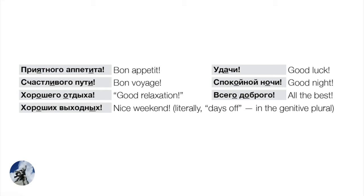Another polite phrase: Хорошего отдыха — literally 'good relaxation,' meaning have a nice vacation or happy time off. Have a good weekend is Хороших выходных — actually a genitive plural. A выходной is a day off, so we're literally saying 'good days off.' We'll just learn this one as a set phrase for now since we haven't covered plurals yet.